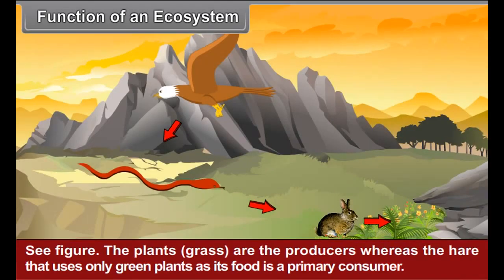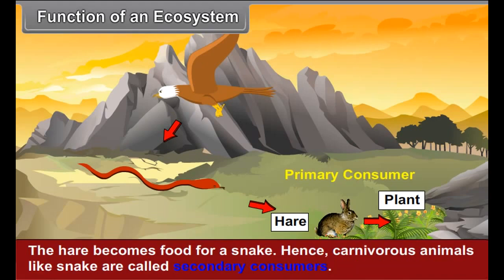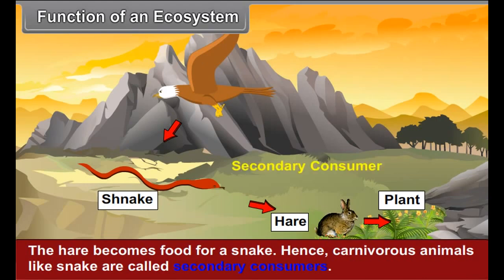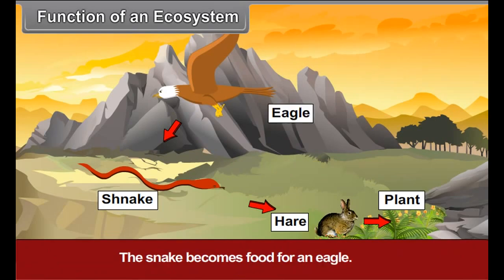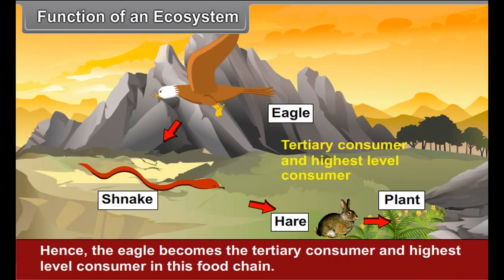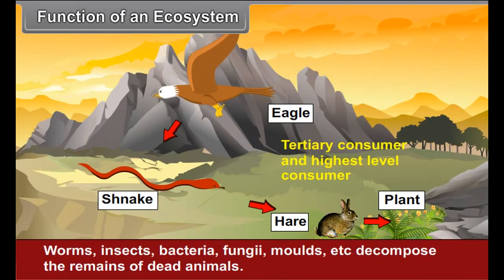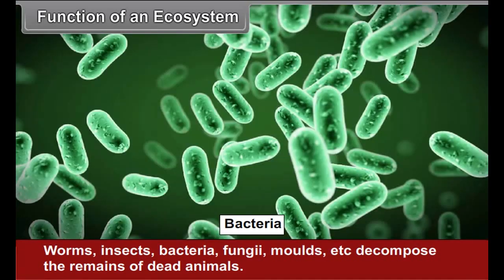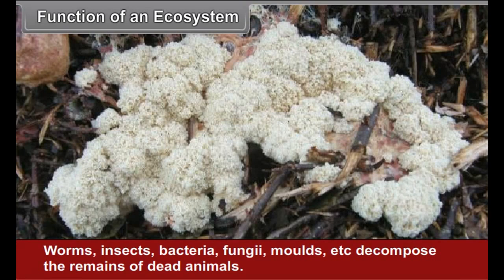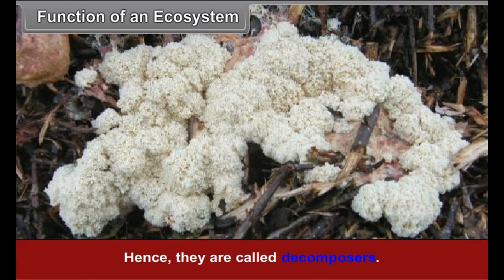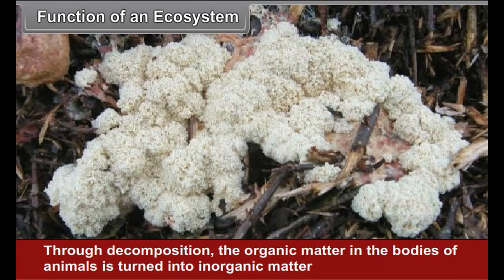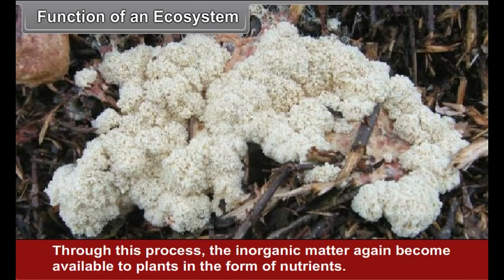See figure 11.2. Grass (plants) are the producers, whereas the hare that uses only green plants as its food is a primary consumer. The hare becomes food for a snake; hence, carnivorous animals like snakes are called secondary consumers. The snakes become food for an eagle; hence, the eagle becomes the tertiary consumer and the highest level consumer in this food chain. Worms, insects, bacteria, fungi, molds, etc. decompose the remains of dead animals — they are called decomposers. Through decomposition, the organic matter in the bodies of animals is turned into inorganic matter, which gets mixed in the soil and again becomes available to plants in the form of nutrients.